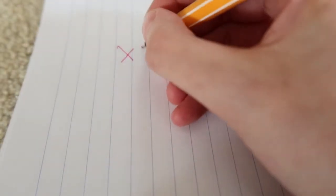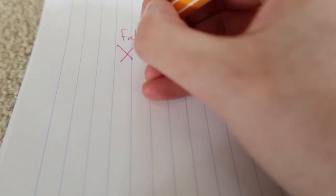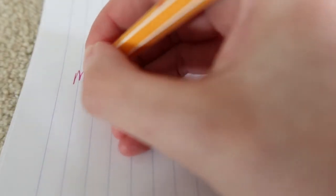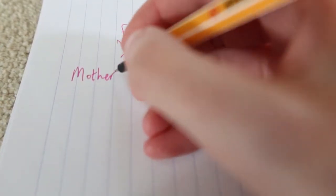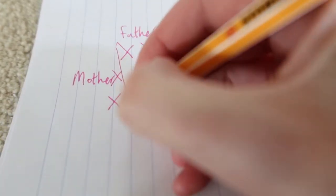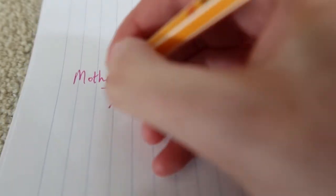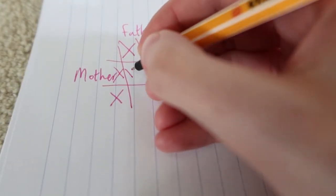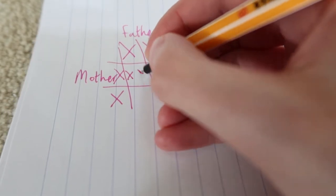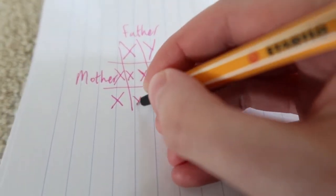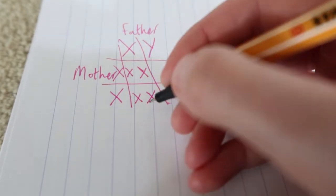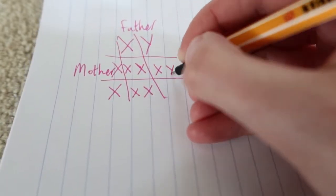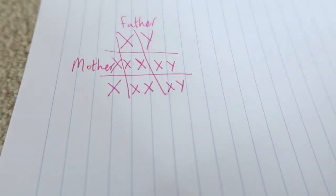Let me do a Punnett square to compare the two systems. For the XY system, the father is XY and the mother is XX. You inherit two X's in these cases, so those will be female. These two will be male because that Y is dominant.